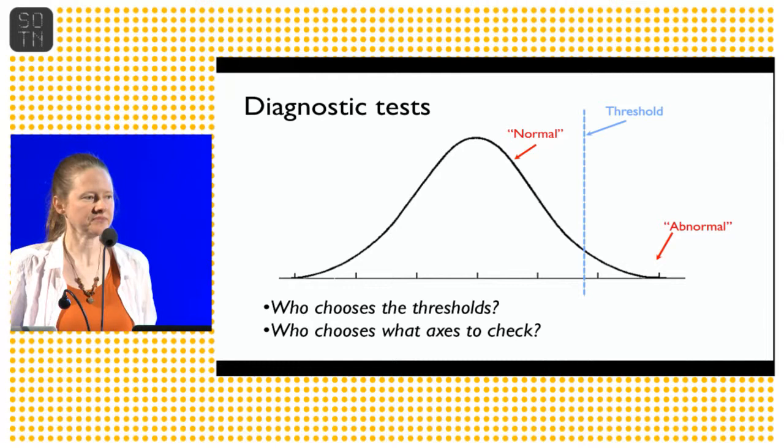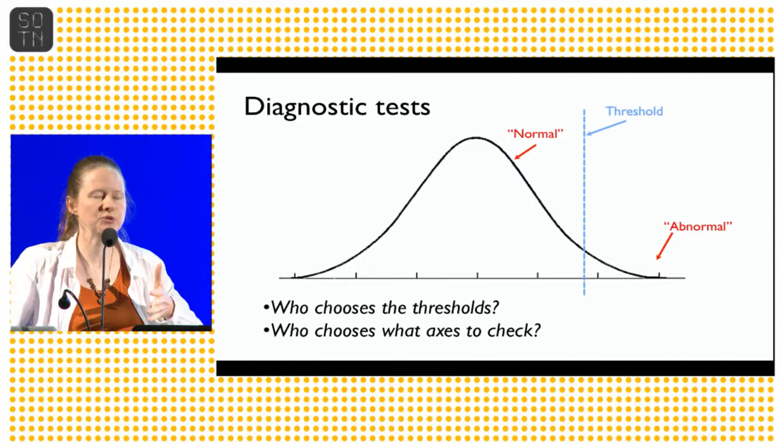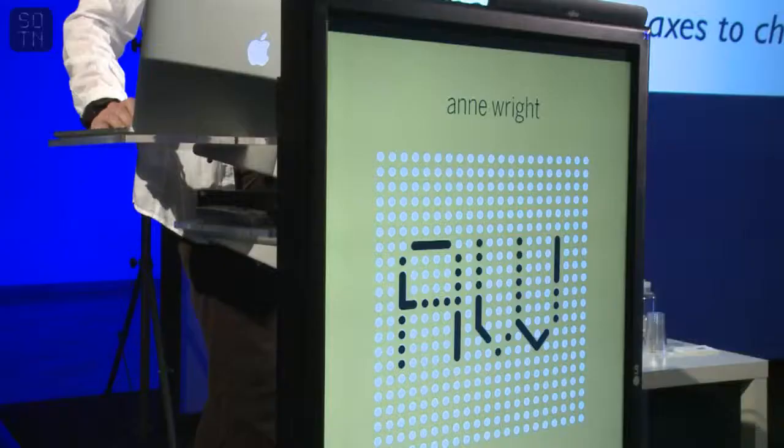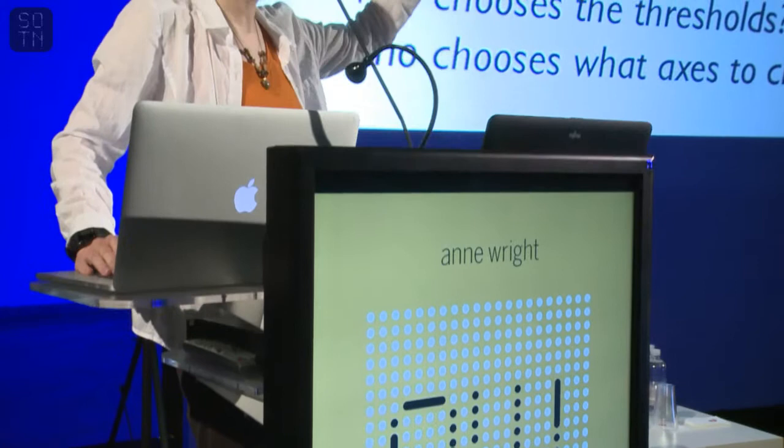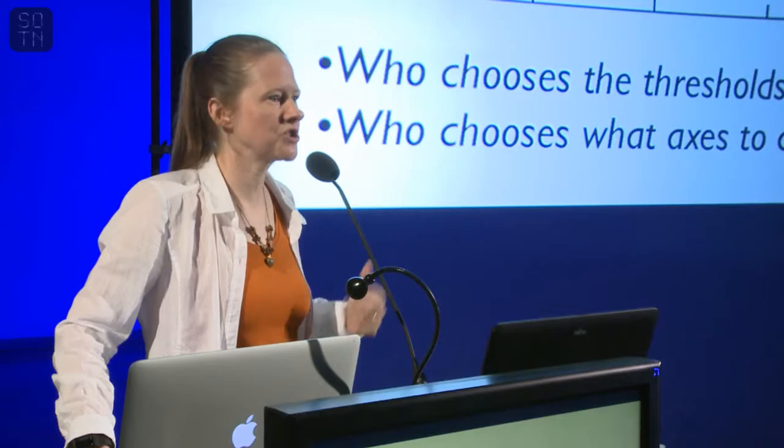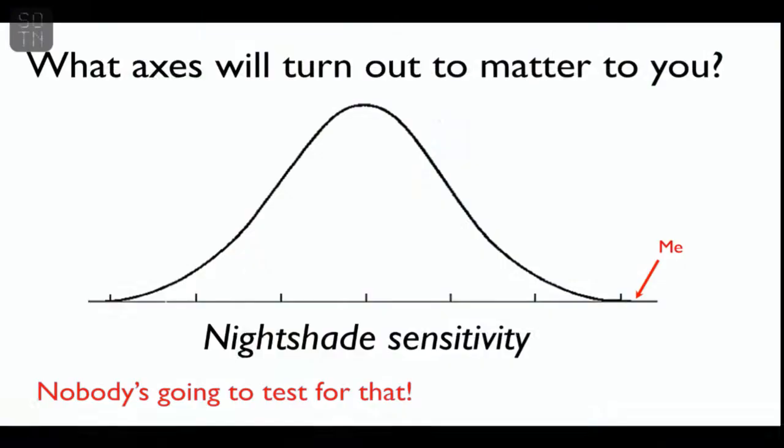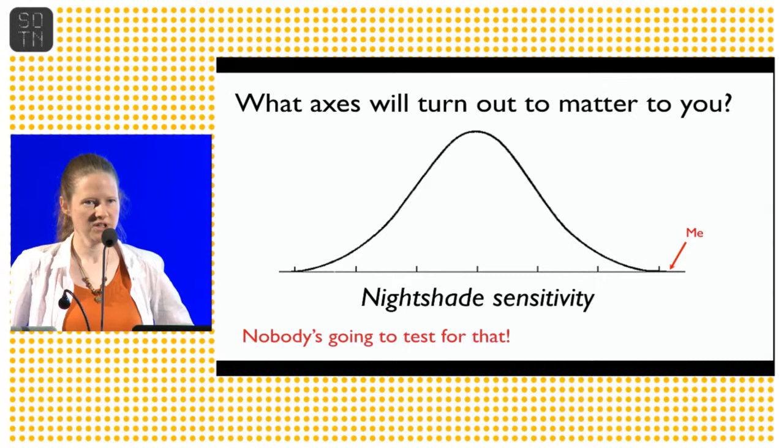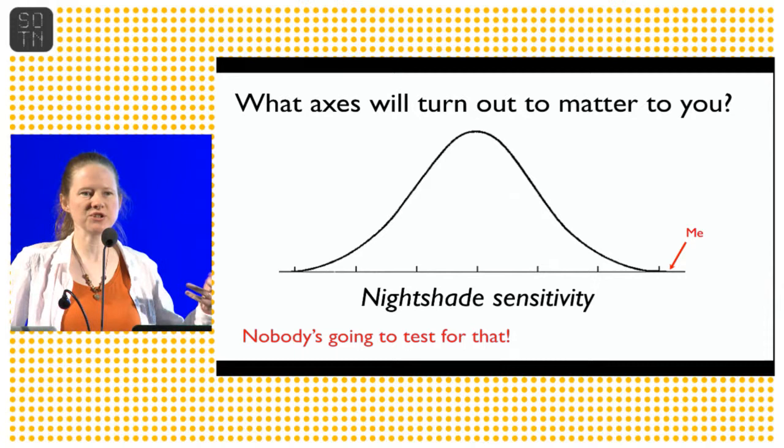But what we don't realize is that there's all sorts of attributes that we don't necessarily even know about where we can be outliers. The only way we're going to figure that out is by ourselves. Diagnostic tests set a threshold between abnormal and normal. But how do you know if you have a reading, is that because you're a mutant or because you're a person who has the expected parameters but you're sick? They can't possibly know that, especially with just one reading. Even which axes turn out to matter to you are not necessarily obvious. For me, nightshade sensitivity turned out to be the biggest thing, but it's not something anybody would have ever tested for.